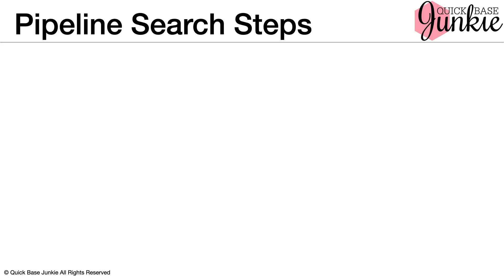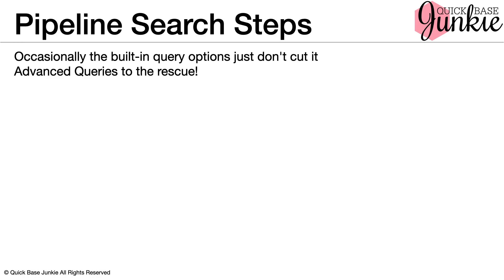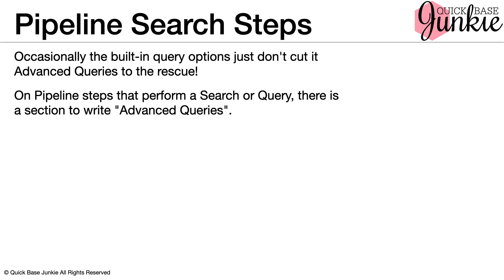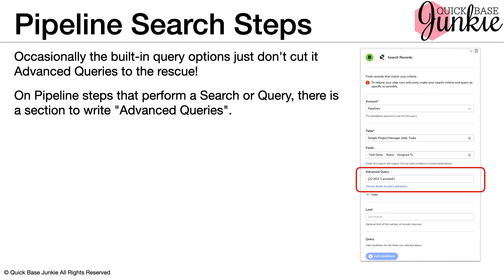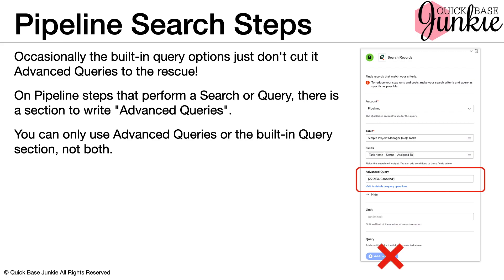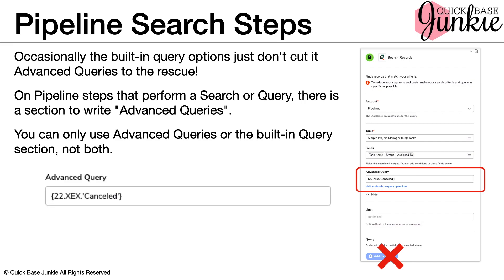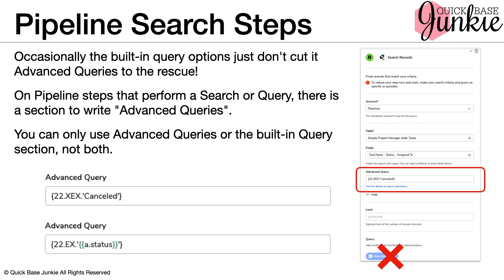You can also use queries in pipeline search steps because occasionally the built-in query options just don't cut it — advanced queries come to our rescue. On a pipeline step that performs a search or query, there's a section to write advanced queries located on the search step. You can only use advanced queries or the built-in queries, not both, so you'll need to remove anything in the standard query section before using advanced queries. Here's a zoomed-in look at that advanced query: a set of single curly brackets with the field ID, period, operator, period, and then our value in a set of single quotations. In pipelines, it's also possible to reference other fields using a Jinja variable included in a set of double curly brackets — just be sure that field has already been pulled into your pipeline in a previous step.